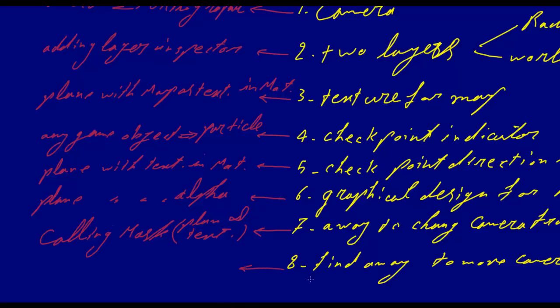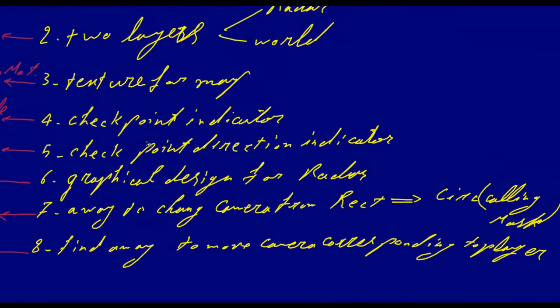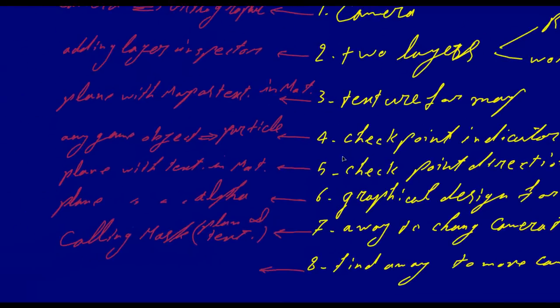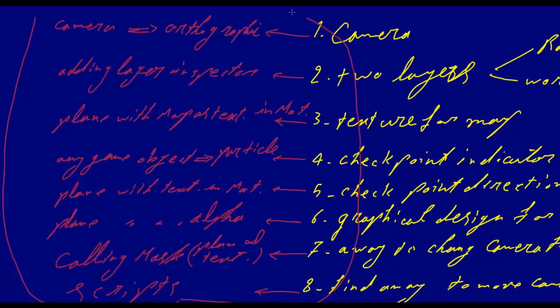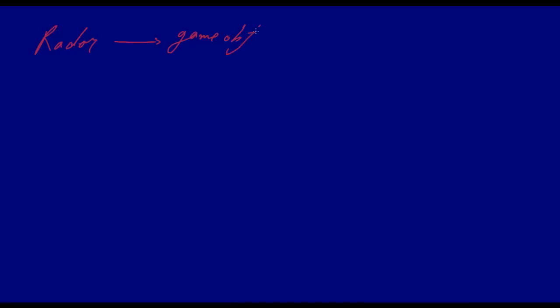The last thing we want is to move the camera by character, and as I mentioned — wrongly there — that will be scripts. Now, this is all we need to make a radar. But we need to organize it in some categories, because we will use a hierarchy. So it will be a 'Radar' game object that's empty — just a placeholder.